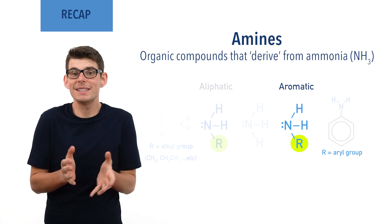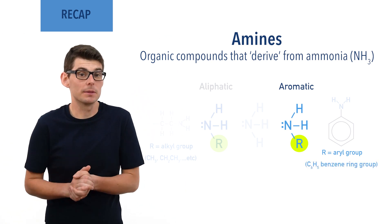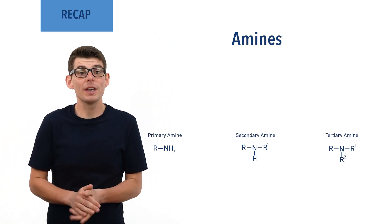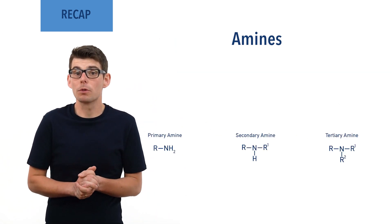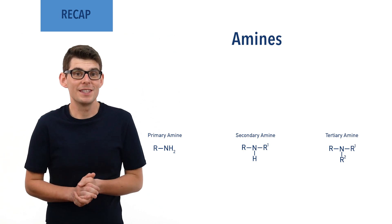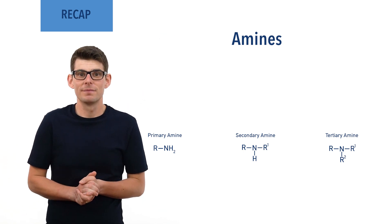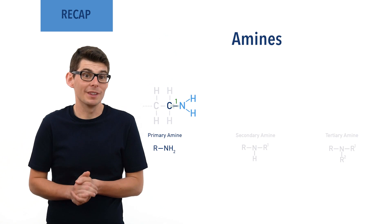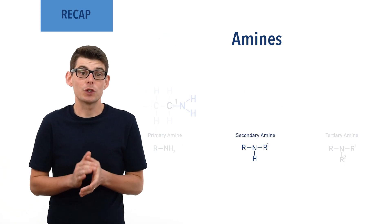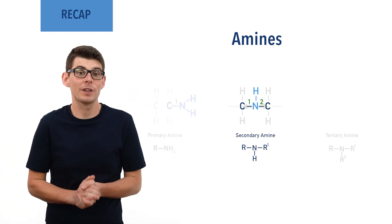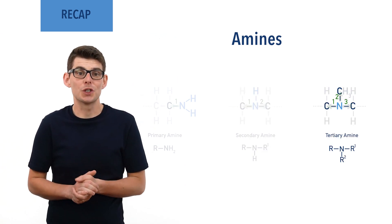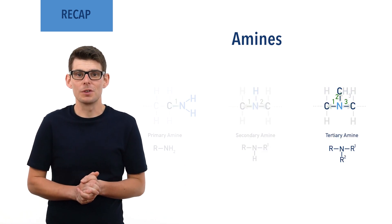Effectively, an aryl group is a benzene ring attached to something else. Amines can be primary, secondary or tertiary, depending on the number of carbon groups bonded to the nitrogen. Primary amines have one carbon group bonded to the nitrogen, secondary amines have two, and tertiary amines have three carbon groups bonded to the nitrogen.